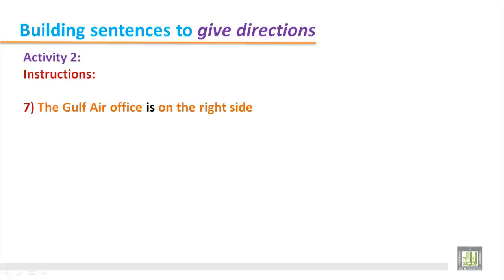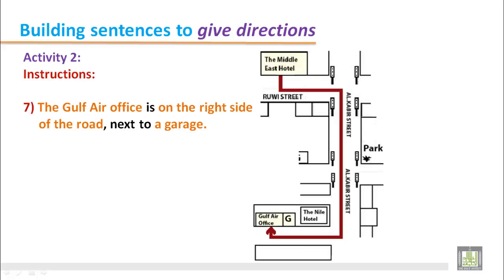Number 7. The Gulf Air office is on the right side of the road next to a garage. When you take the second turning on your right, go straight and you can find the Gulf Air office on the right side of the road. It is just next to the garage. This is the garage, and after that you can find the Gulf Air office on your right.